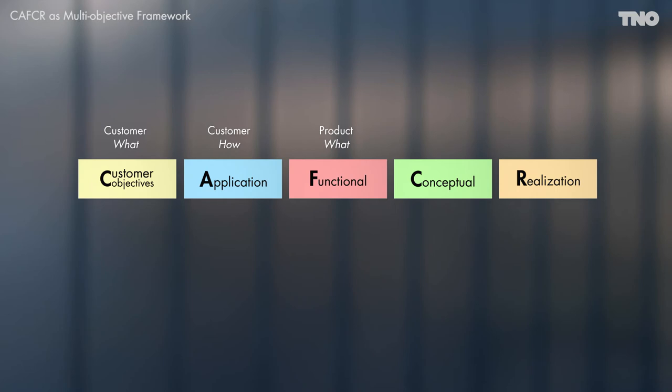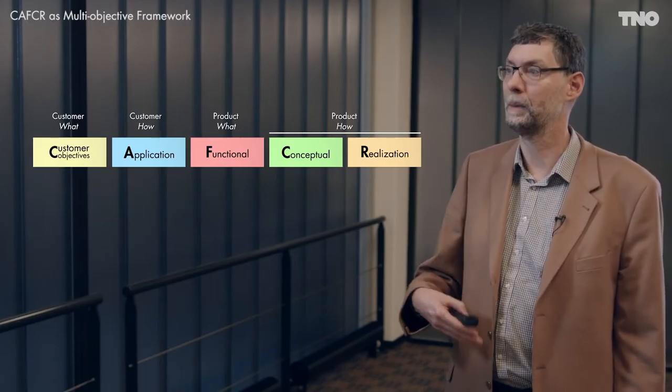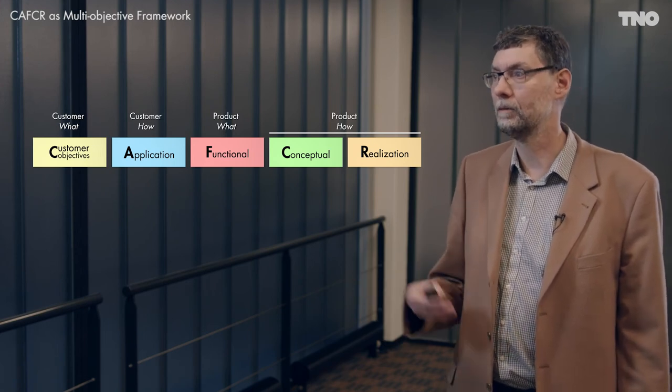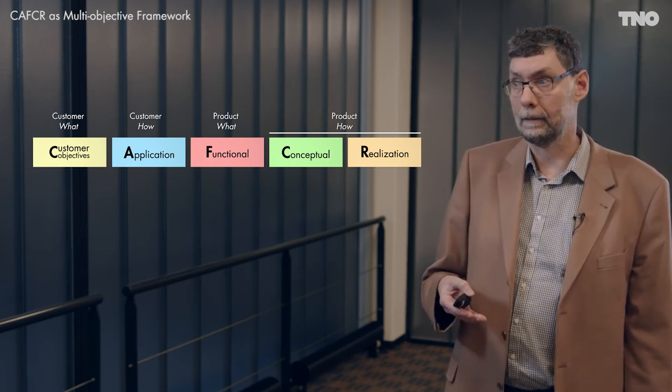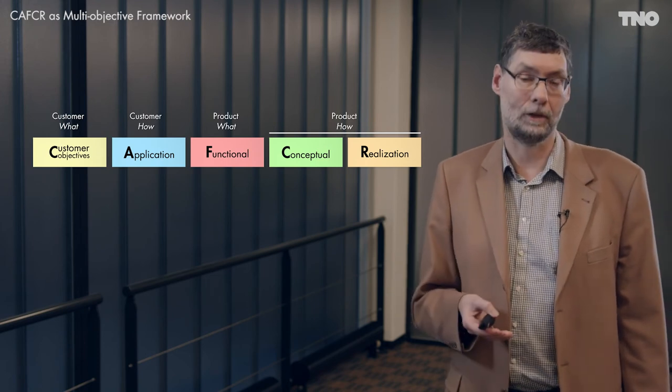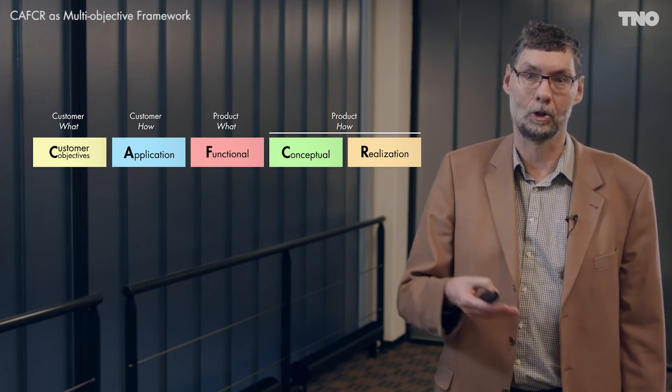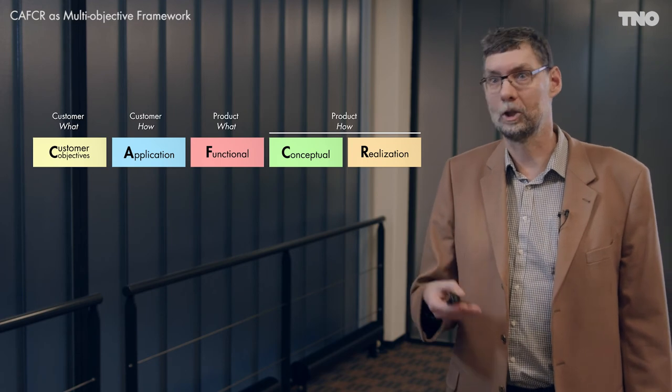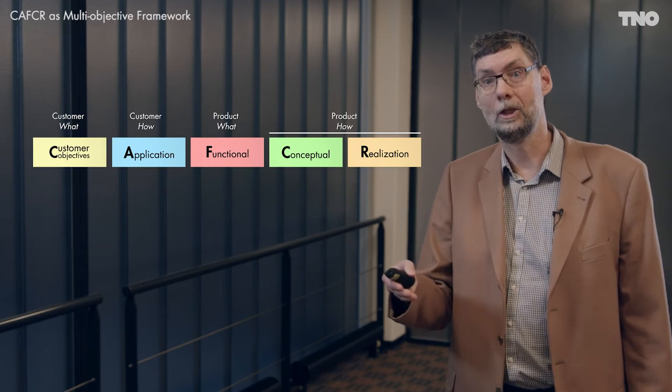Next to the customer and application views, we get a functional view — a better name would be the black box view. It defines the system as a black box: what is the functionality of the system and what are its performance properties. The conceptual and realization views are both 'how' views. The conceptual view is a high-level view explaining the ideas and concepts behind the design, while the realization view gives all the details. The ideas of a design typically change slowly and are reusable from system to system, but the realization is very technology-dependent and changes fast. We can only verify and validate performance once we have real components and real implementations.